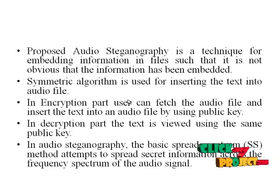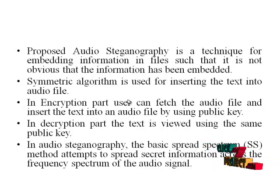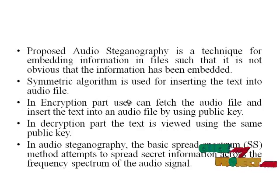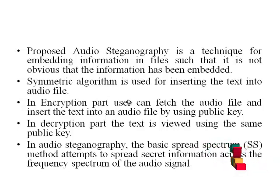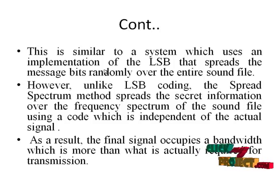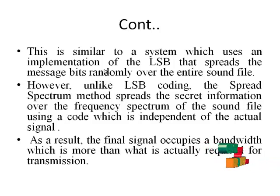In the encryption path, users process the audio file and insert the text into the audio file by using a public key. In the decryption path, the text is viewed using the same public key. In audio steganography, the basic spread spectrum method attempts to spread secret information across the frequency spectrum of the audio signal. This is similar to a system which uses an implementation of LSB that spreads the various bits randomly over the entire sound file.